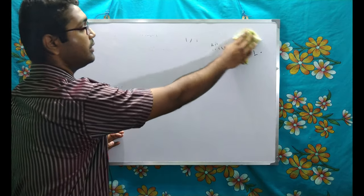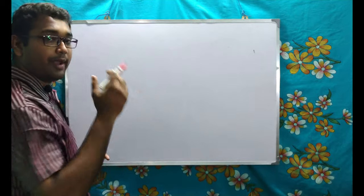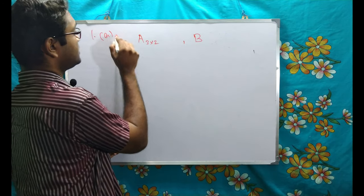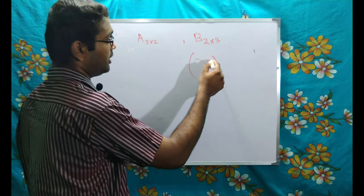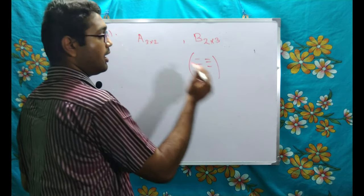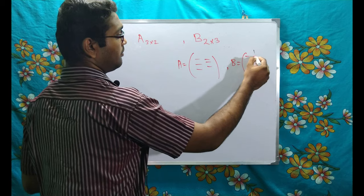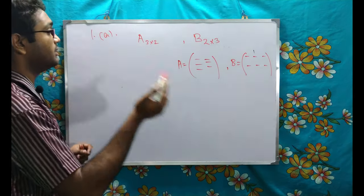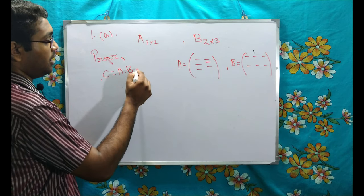Now the first problem on linear algebra from the 2018 paper: they give two matrices — A which is 3×2 and B which is 2×3 — and ask us to prove that C = A×B is singular. The meaning of singular is that the determinant of C equals zero. We see there is a formula det(C) = det(A)×det(B), but we cannot use it here because A is not a square matrix. However, since A is 3×2 and B is 2×3, C will be a 3×3 matrix.